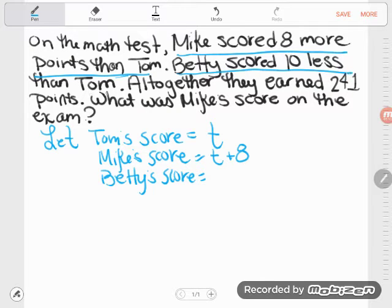Next phrase. Betty scored 10 less than Tom. She scored 10 less than Tom. So if you started with Tom's score, if you wanted to find Betty, you would have to take away 10 from Tom's score.